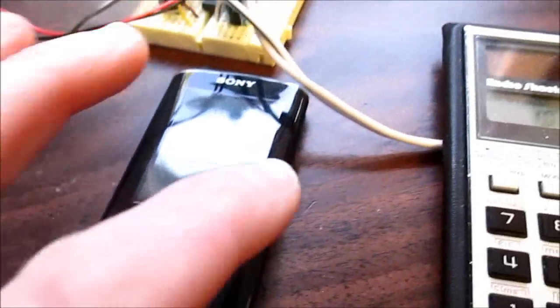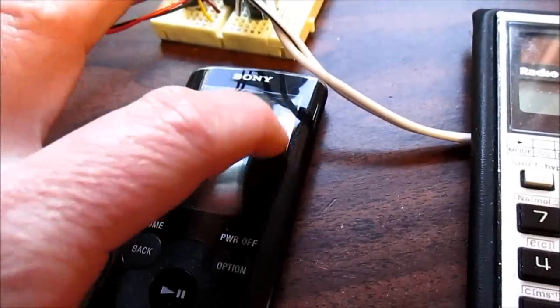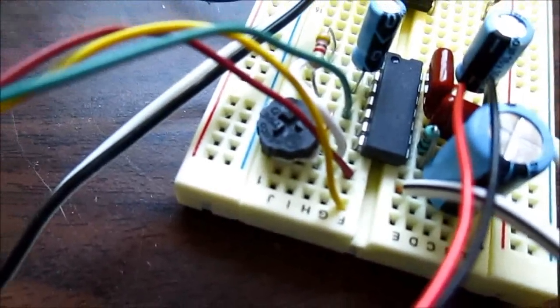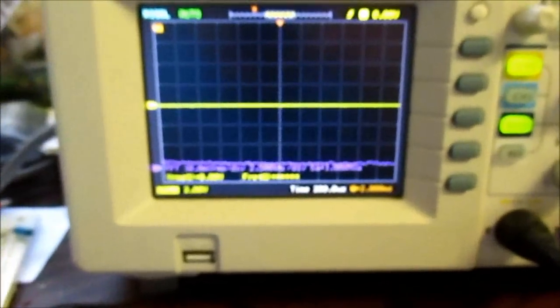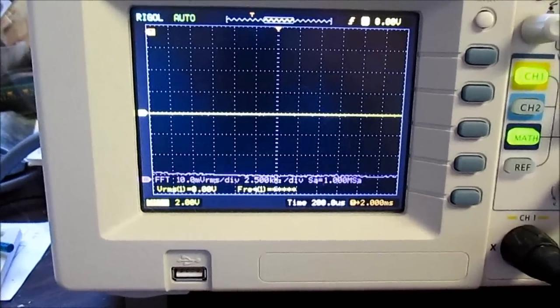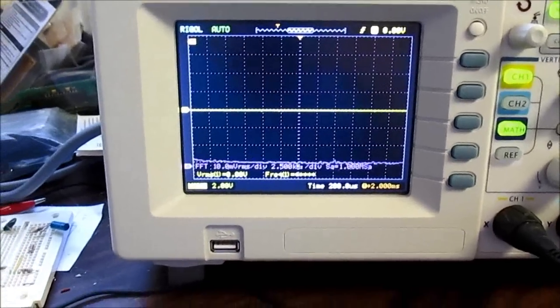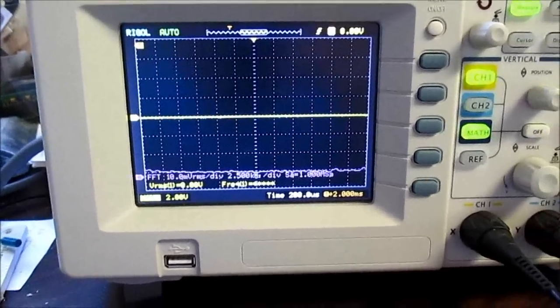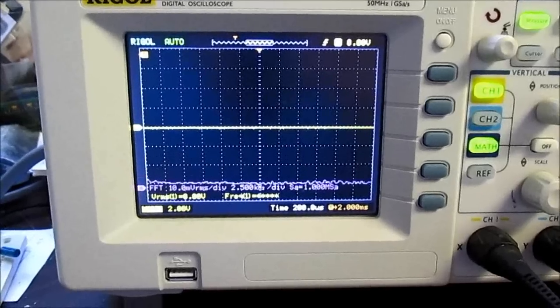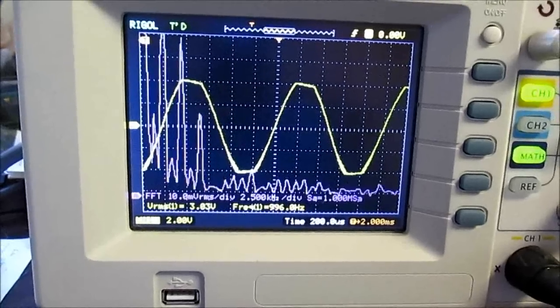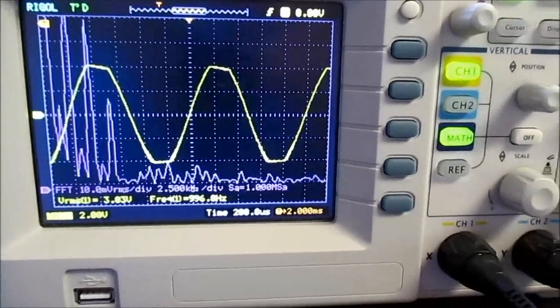So instead of 6 or 9 volts, we'll test it with 12 volts measured right at the pins. And because the volume control steps are kind of coarse on this player, I put a potentiometer there so I can adjust the volume, and well, the signal level really. And that way I can get tighter adjustment on the scope here at the point of clipping.